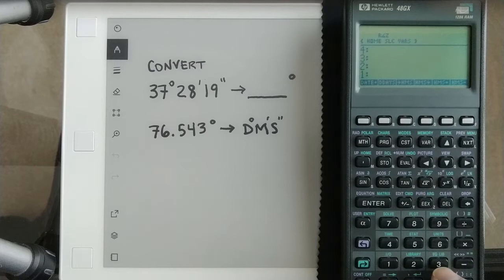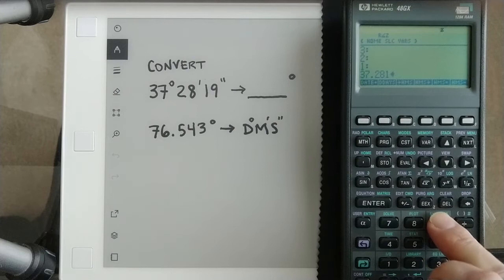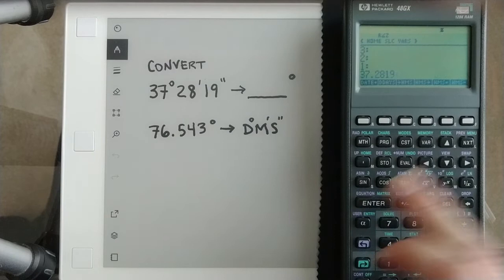So 37, you hit the point and then you do the 28, and you would think maybe you hit point again but you don't, you just do 28 minutes and 19 seconds there.